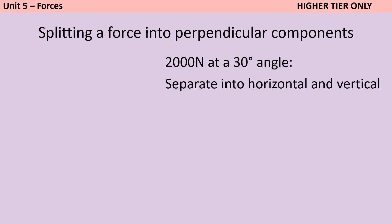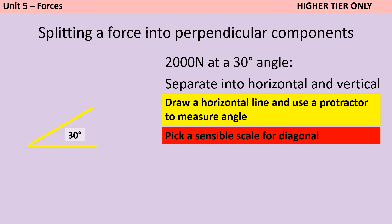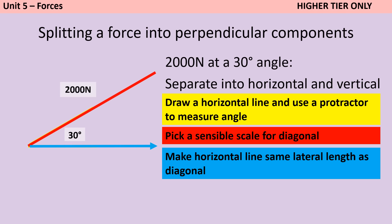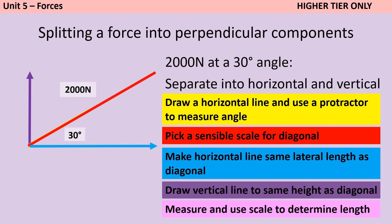Probably the most challenging thing you can be asked to do is the reverse — separate a diagonal force into its perpendicular components. Again we need a scale diagram: draw a little horizontal line, use your protractor to work out the correct angle, then use a sensible scale and draw the full length of the diagonal line. Make the horizontal line the same lateral length as that diagonal and do a vertical line the same height, then use your scale to determine the length of each component.